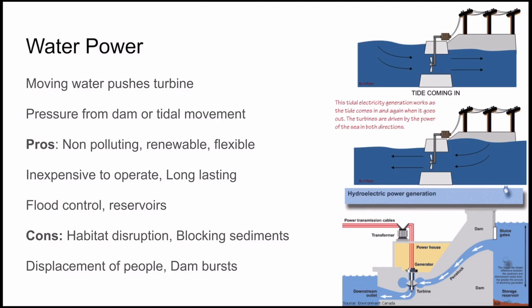However, dams disrupt both ecosystems and human communities. Damming up the river submerges huge areas upstream, displacing people from their homes and disrupting habitats. For example, dams in the western United States have blocked salmon from swimming upstream to spawn. Plants decay in the flooded area and release a lot of greenhouse gases. Meanwhile, downstream, farmland is deprived of the enriching sediment carried by the river. Dam bursts can also be extremely deadly, potentially killing thousands of people living in the area below the dam.